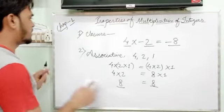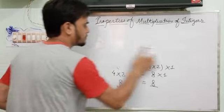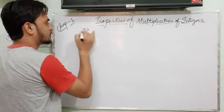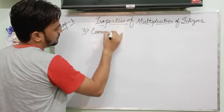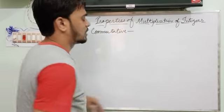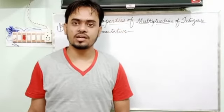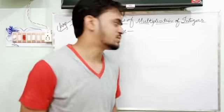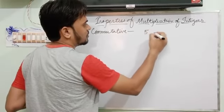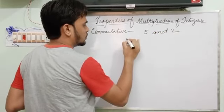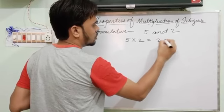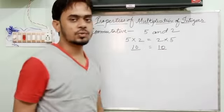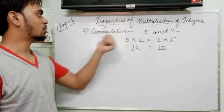The third property is the commutative property. If you have two integers and multiply them, then replace the order of the integers, the result should be the same. For example, five and two: five into two should equal two into five. Five twos are ten, and two fives are ten — both results are the same. This means multiplication also follows the commutative property.